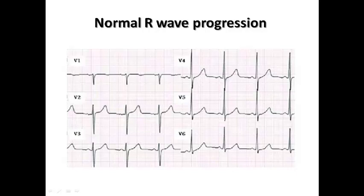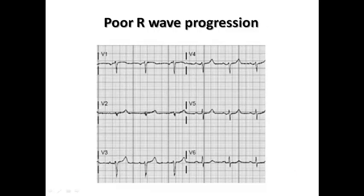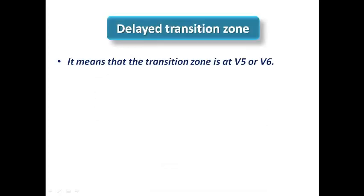In V1, V2, and V3 the R-S ratio is still less than 1, but in V4 the R-wave becomes taller than the S-wave, so the transition zone is at V4 — this is normal R-wave progression. And here is another example of poor R-wave progression in which transition is delayed till V6, as V6 is the first lead where R-wave is more than or equal to S-wave.